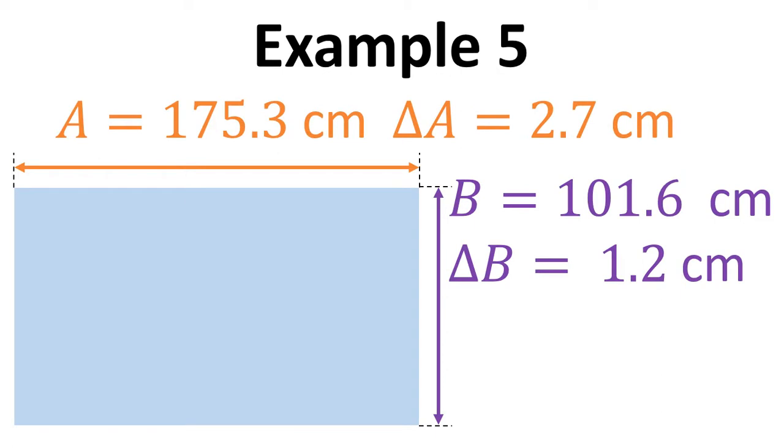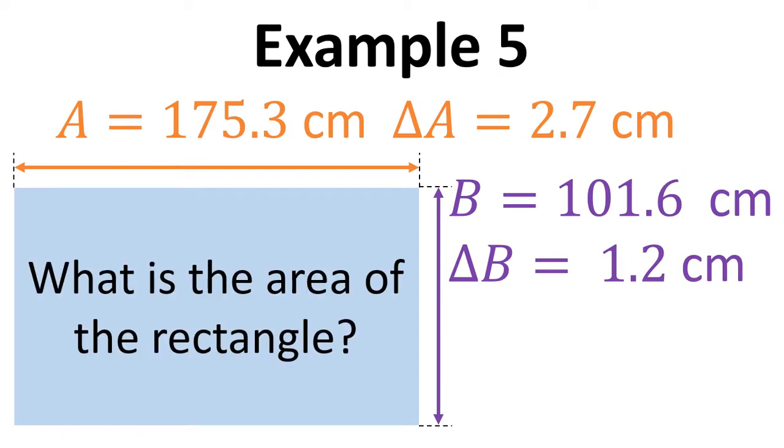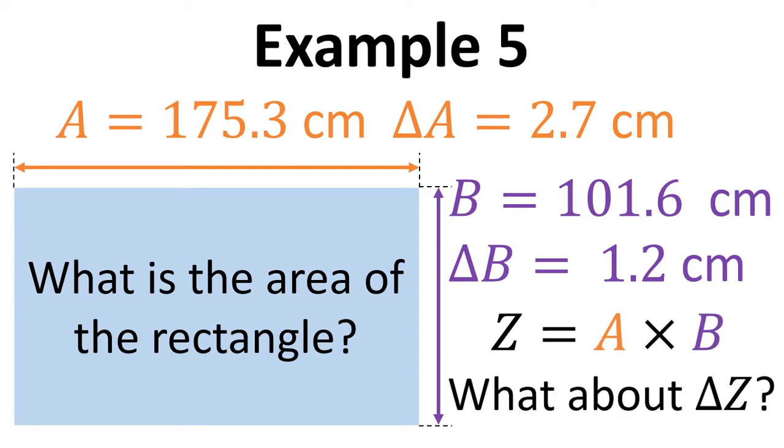Now I want to look at an example where we multiply these two values together. So the question is, what's the area of the rectangle? And Z equals A times B, and we also need to consider the uncertainty in Z, the delta Z.